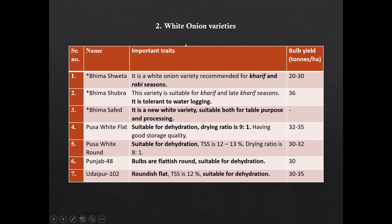White varieties of onion: Bhima Shweta is suitable for both seasons. Bhima Shubhra is tolerant to waterlogging. Bhima Safed is a new variety suitable for both table and processing purpose. Phule White Flat is suitable for dehydration and has a drying ratio of 9:1. Phule White Round is also suitable for dehydration and has a drying ratio of 8:1. Arka 48 has a bulb that is flat-round and is suitable for dehydration.